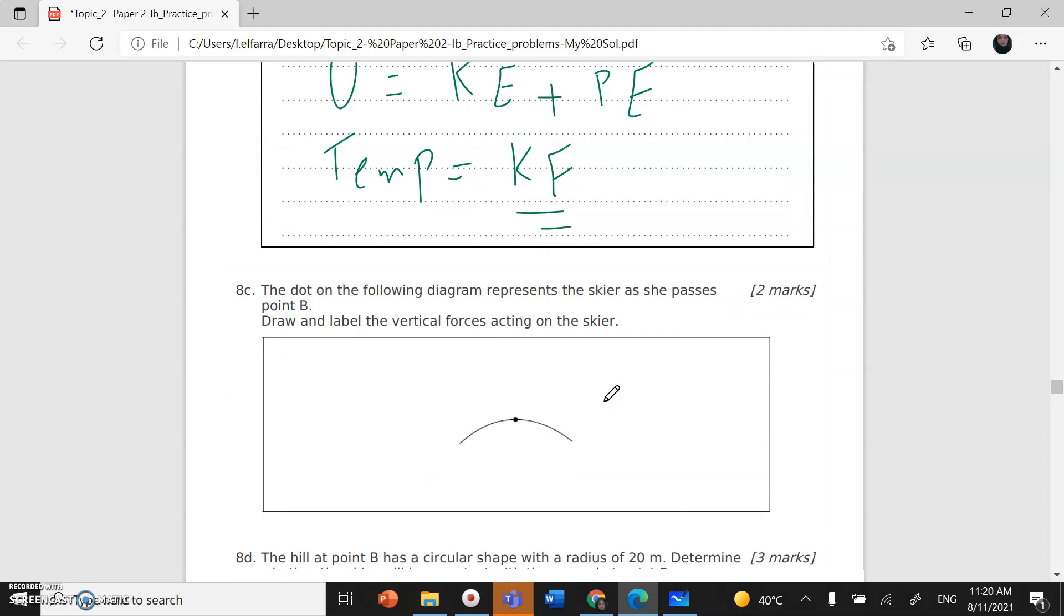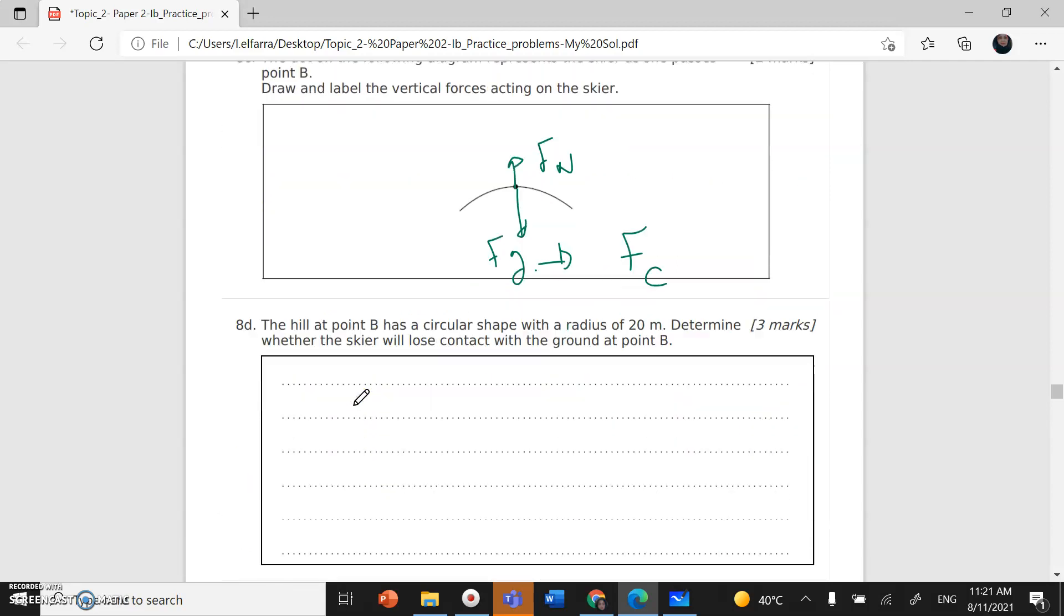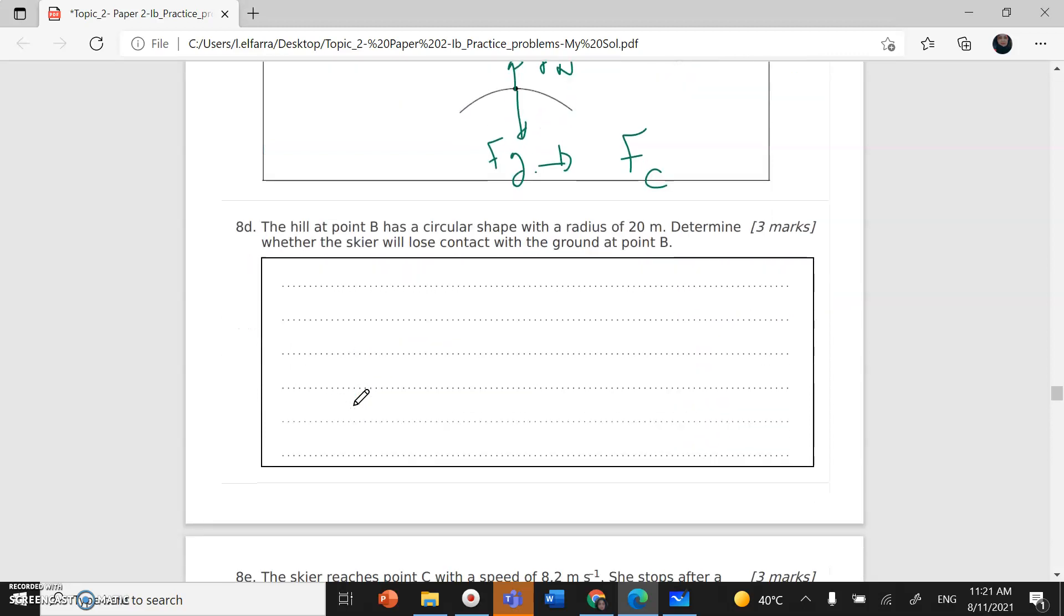Part C: Draw and label the vertical forces. At point B I have two forces. I have the gravity and the normal force. This one should be more than the normal force because this one is responsible for the centripetal force. Both of them, the resultant of both of them are responsible for that centripetal force. And we can prove this one here in part D, section D.